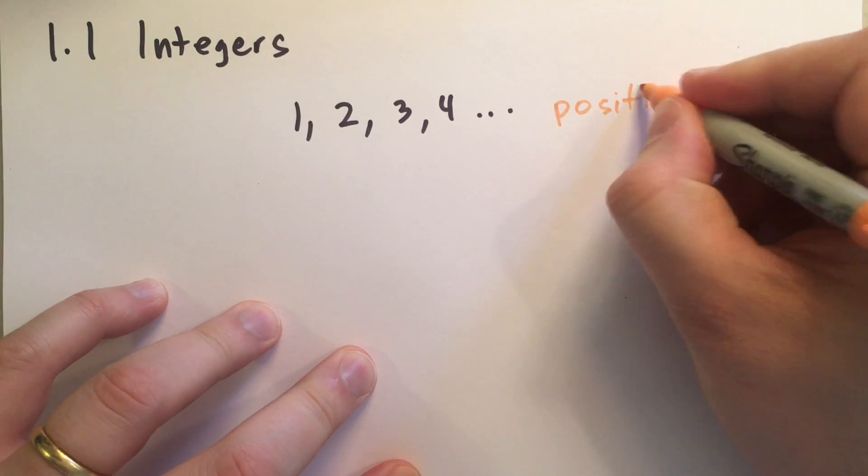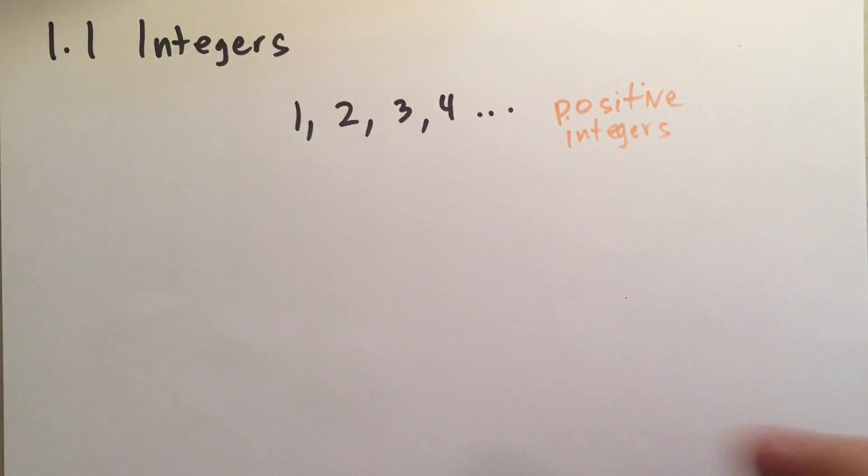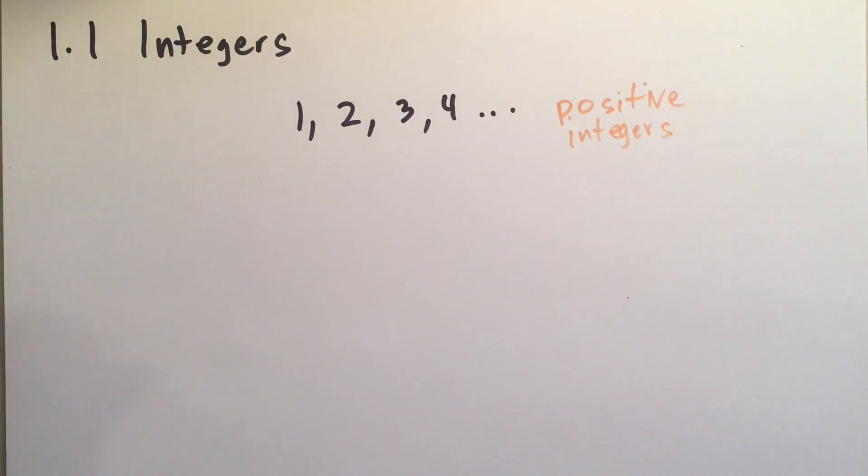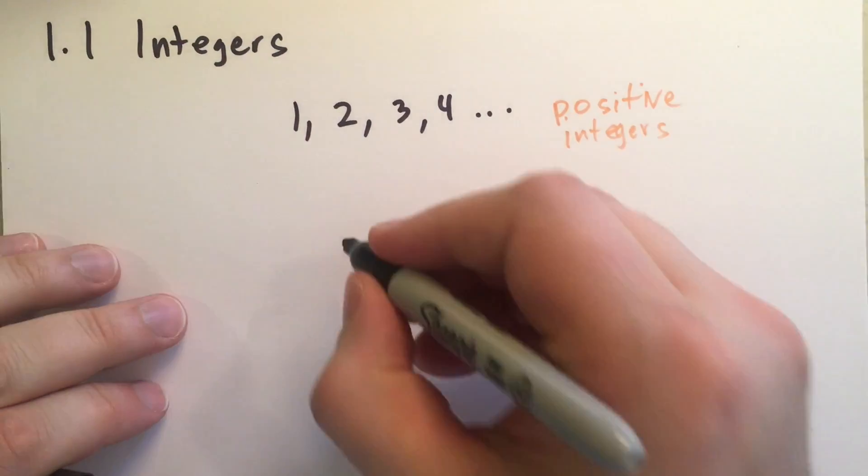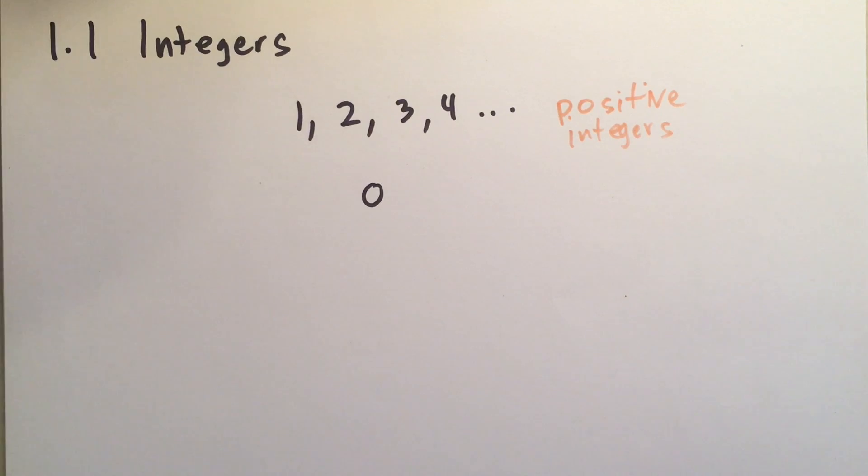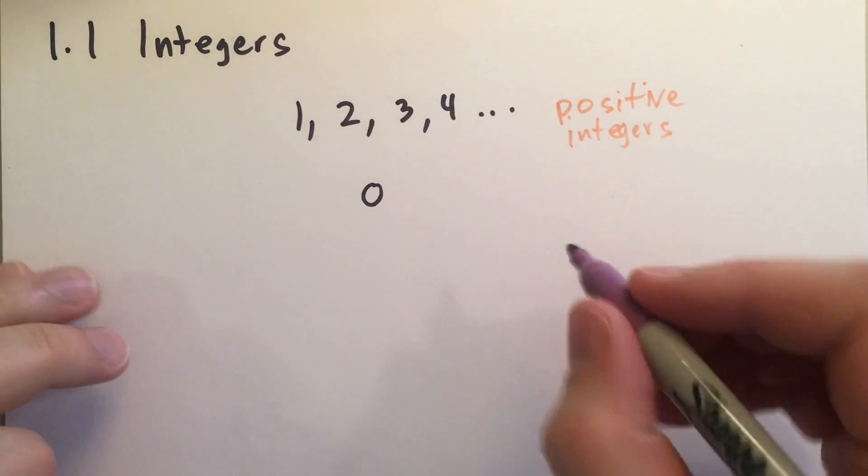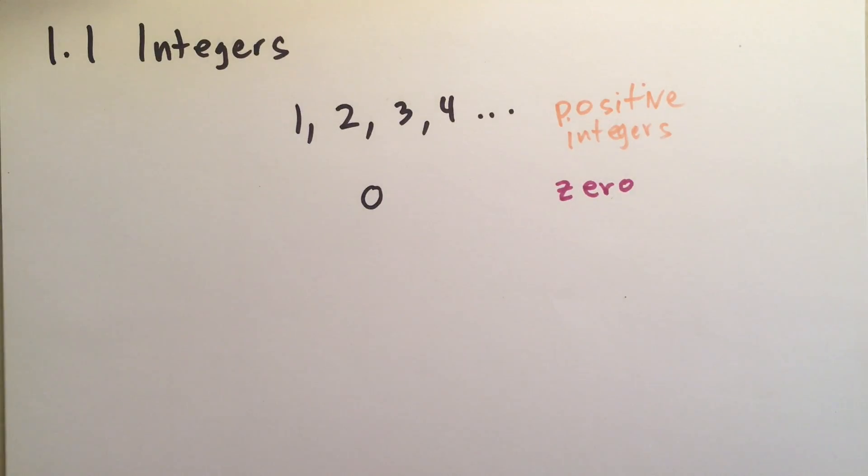These numbers are all called the positive integers. As you can tell, the series goes on forever, it doesn't end. It's an infinite series. At some point in your education, you learned about the special number called 0. 0 is special because it represents nothing. I don't know if you've seen videos on math about the breakthrough that 0 was, but this is a very important and significant number. It's going to show up again and again as we learn math. It has some very special properties.